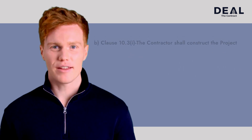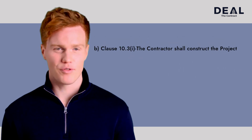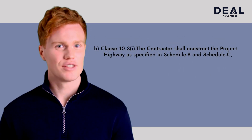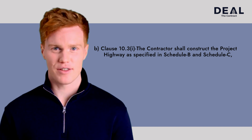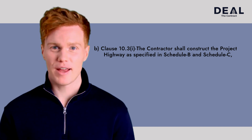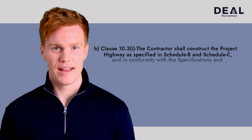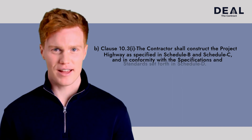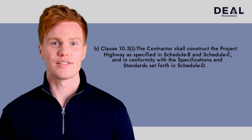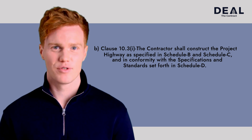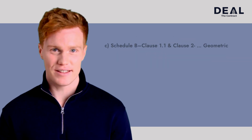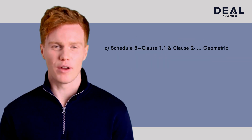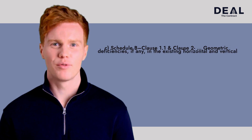Clause 10.3(i) — the contractor shall construct the project highway as specified in Schedule B and Schedule C, and in conformity with the specifications and standards set forth in Schedule D. Schedule B, Clause 1.1 and Clause 2 further elaborate the scope of construction.